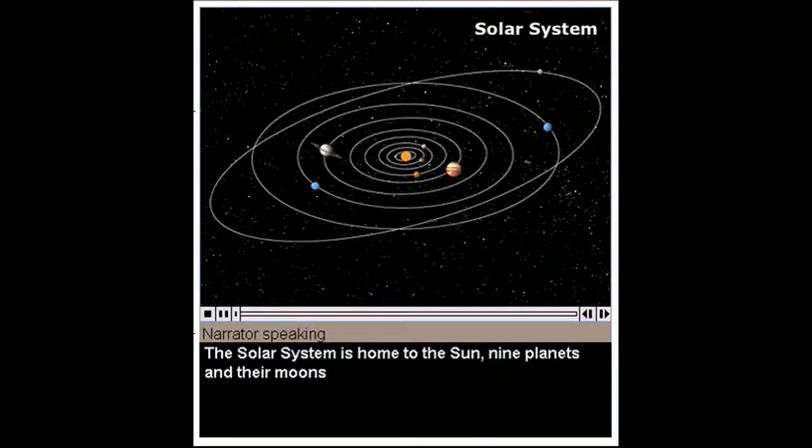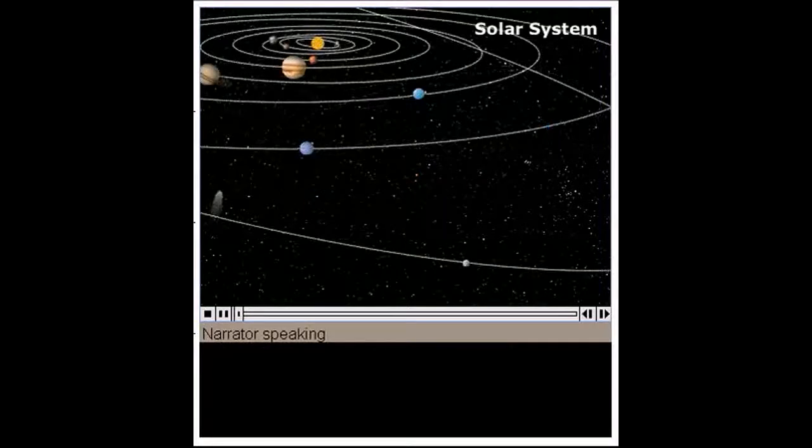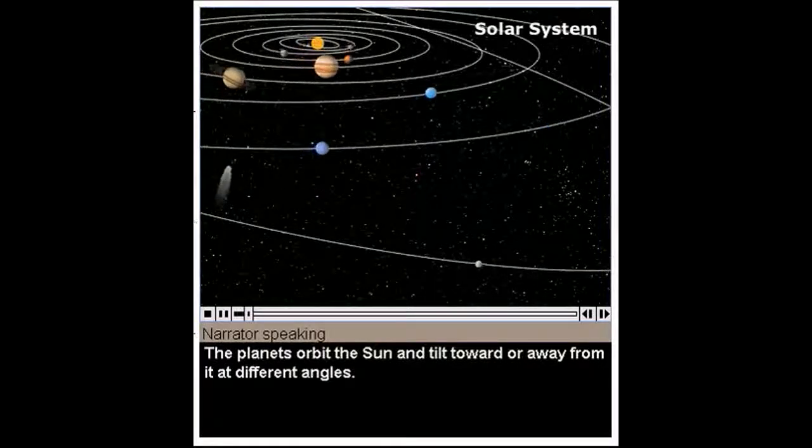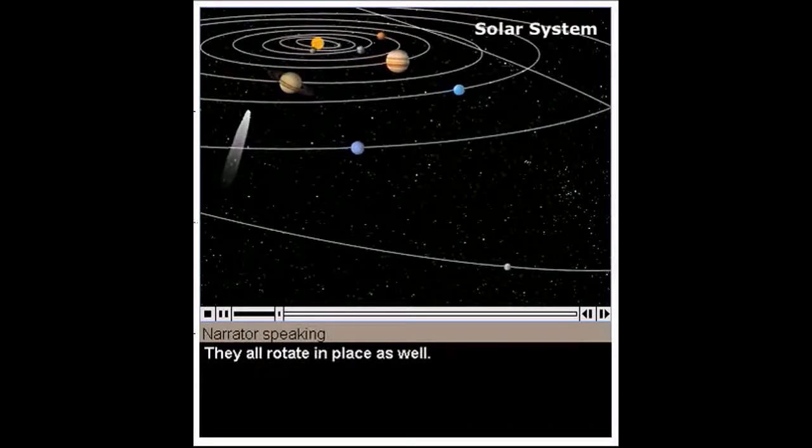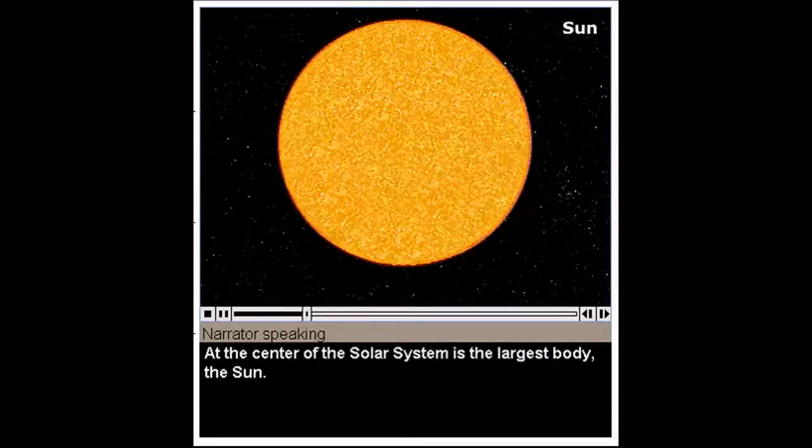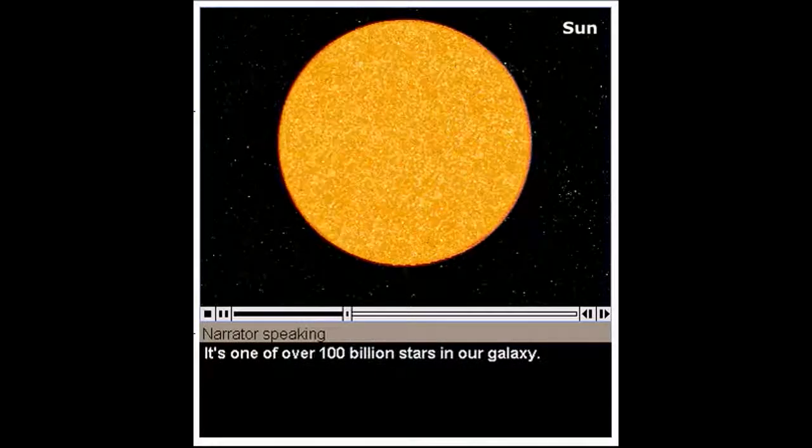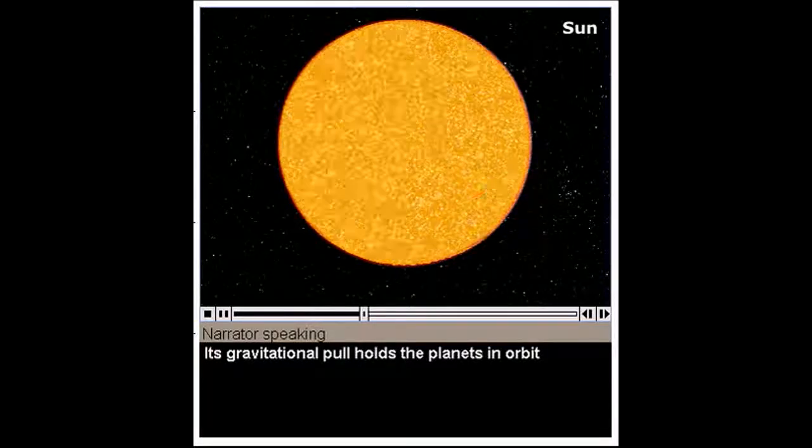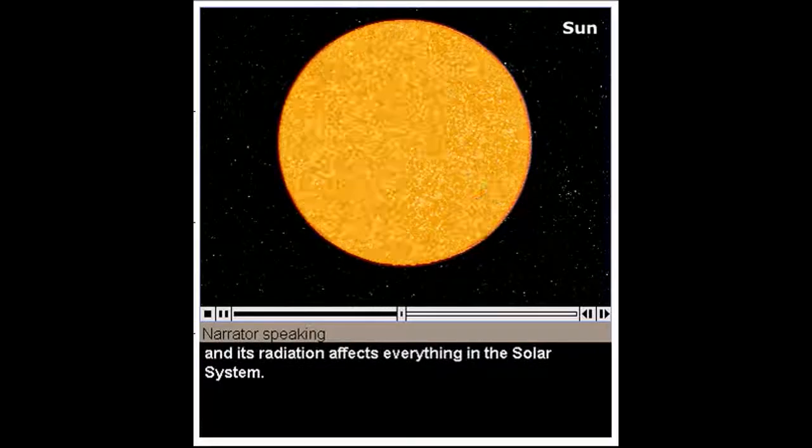The solar system is home to the sun, nine planets and their moons, asteroids, comets, and interplanetary dust and gas. The planets orbit the sun and tilt toward or away from it at different angles. They all rotate in place as well. At the center of the solar system is the largest body, the sun. It's one of over 100 billion stars in our galaxy. Its gravitational pull holds the planets in orbit and its radiation affects everything in the solar system.